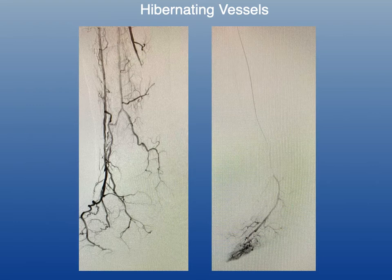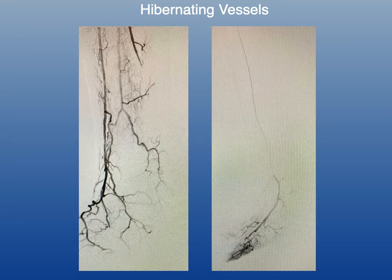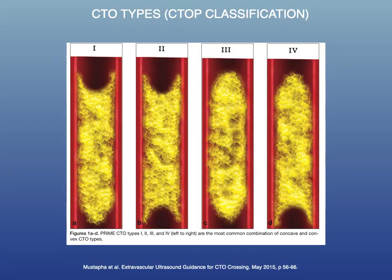Another example is this CLI patient with a wound on the bottom of his foot. He has an occluded distal posterior tibial artery, and after that it was tough to tell whether we were dealing with hibernating or non-hibernating vessels. Once I crossed the posterior tibial artery occlusion, you can see robust filling of vessels in the foot, including an angiographic wound blush — another example of hibernating vessels.